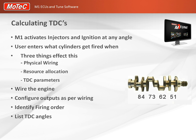Here's a step-by-step process to follow. First, wire the engine so that cylinder 1 goes to injector 1, cylinder 2 goes to injector 2, cylinder 3 goes to injector 3 - keep it simple. Then configure the outputs in the input/output setup and allocate each output. Then identify the firing order, list down the top dead center angles, and add all that information into the engine detail setup in the initial setup workbook.